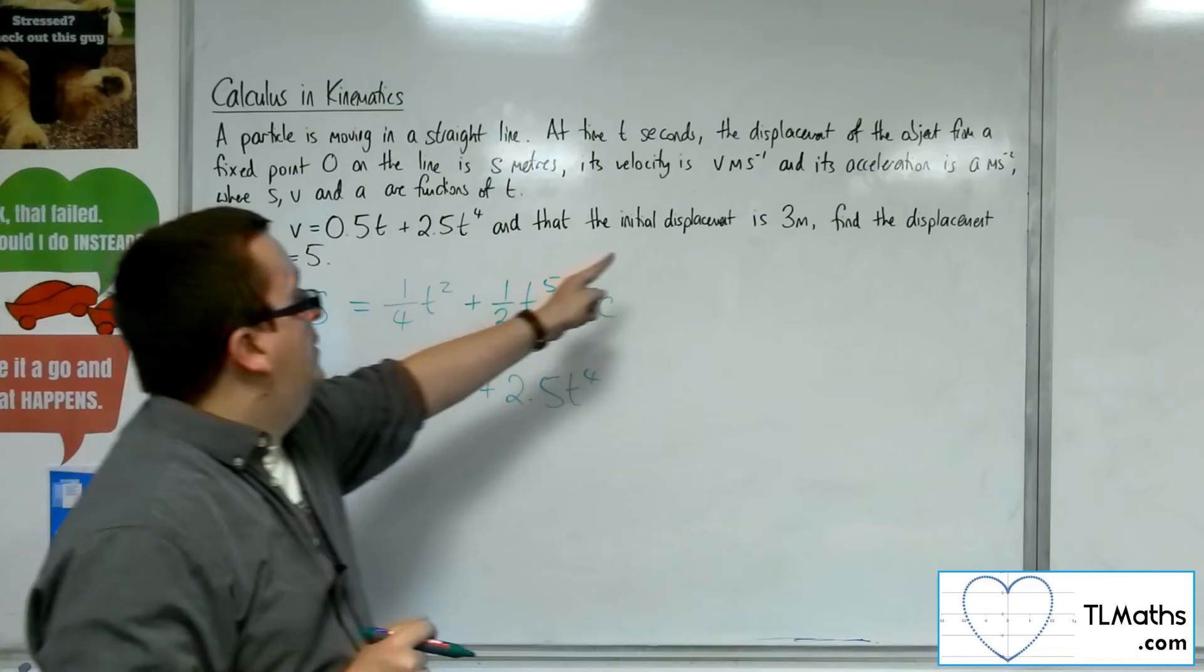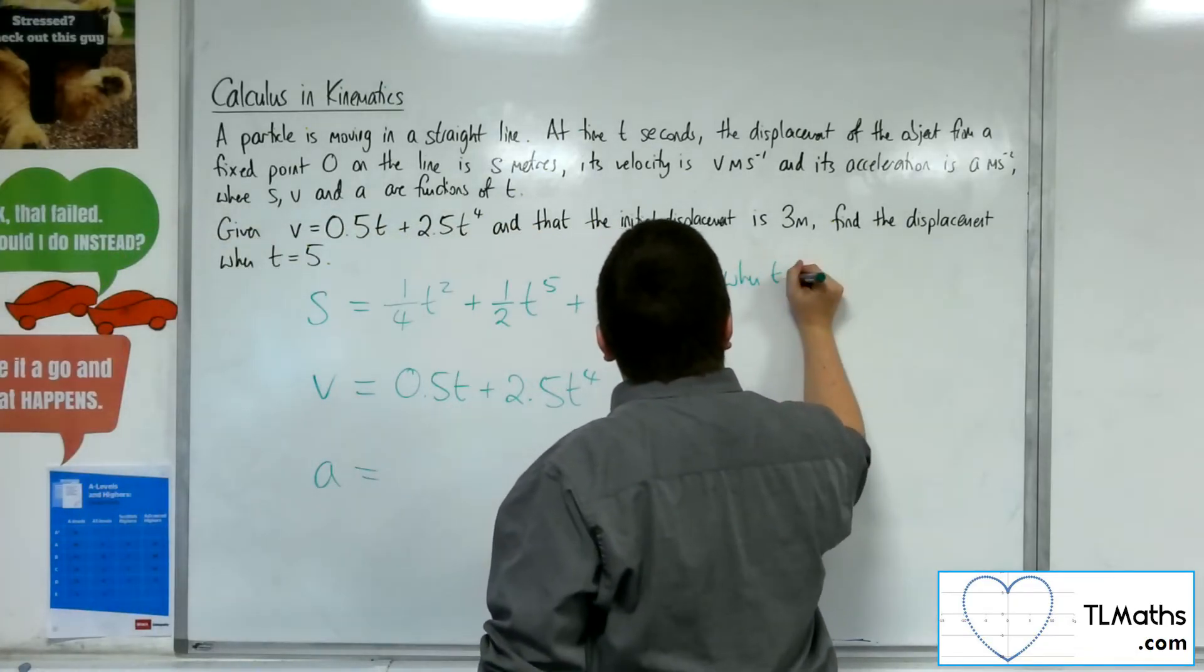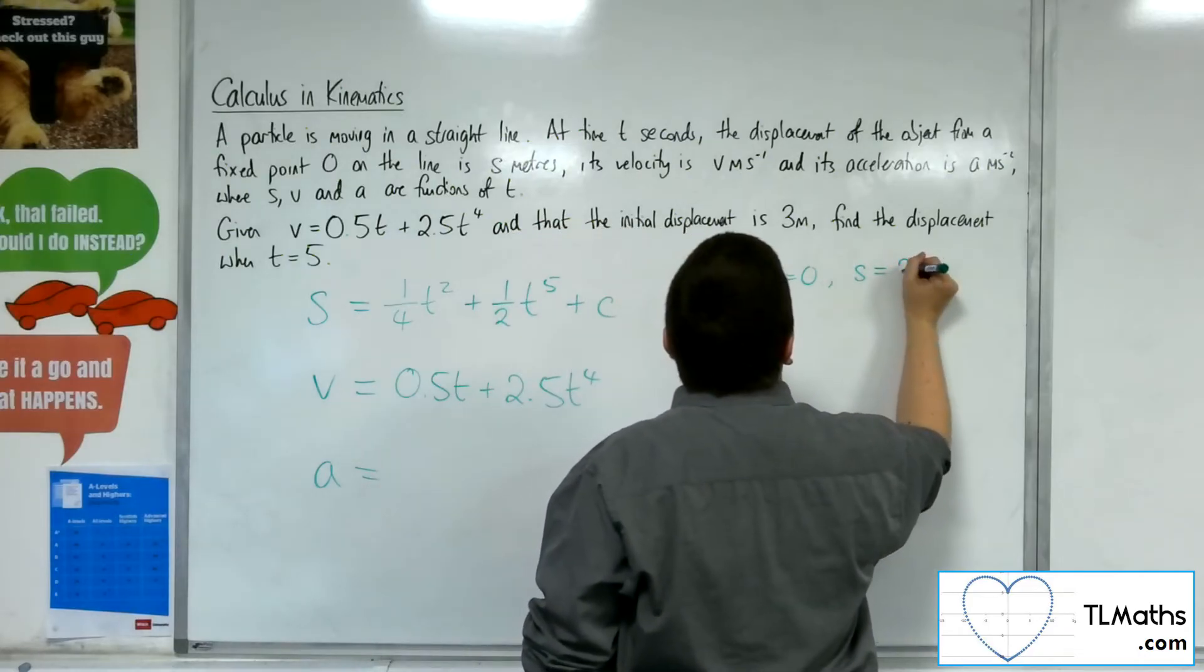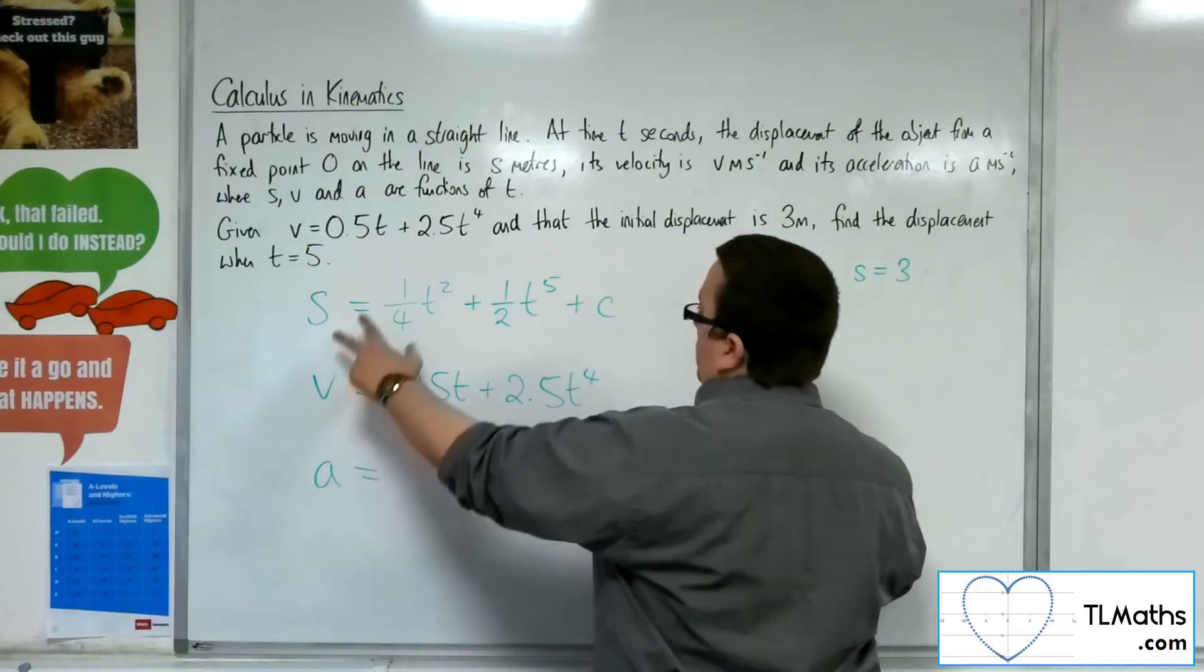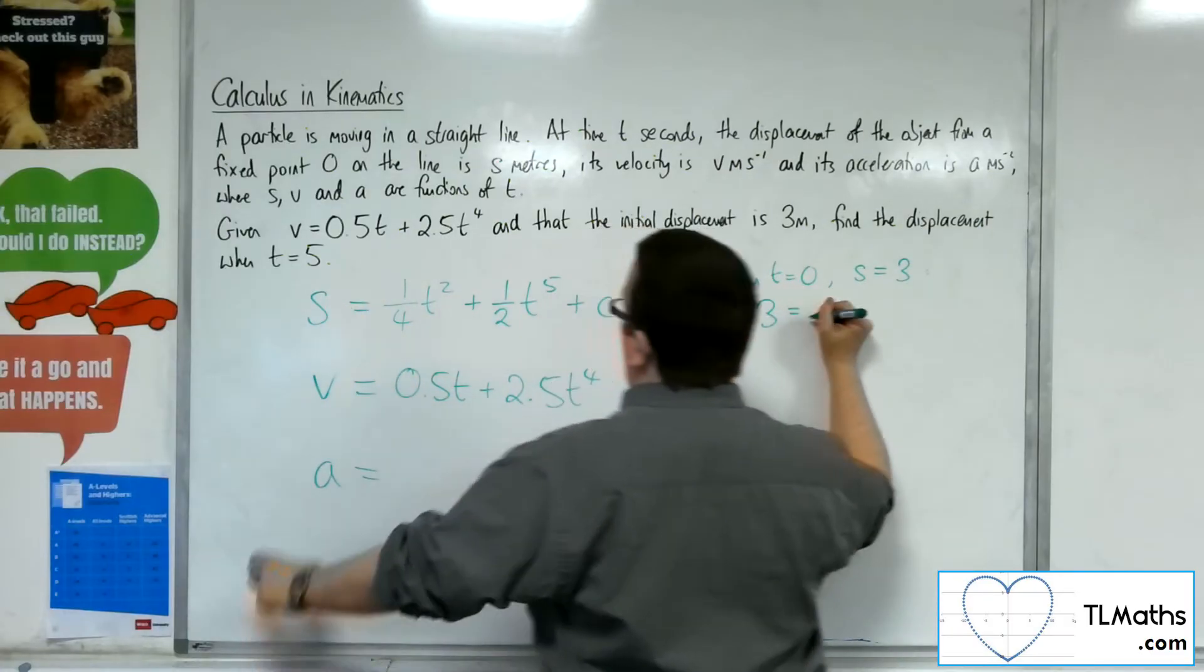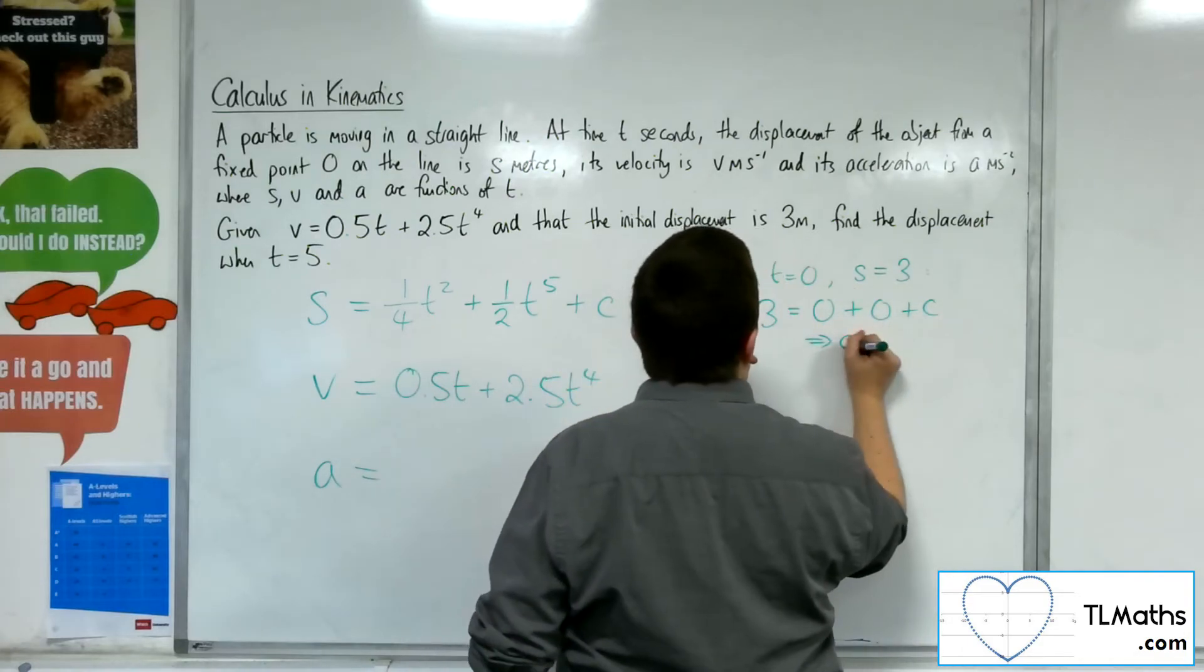Now, we're told that the initial displacement is 3 meters, so when t is 0, that's what it means for initial, the displacement is 3. So I can substitute that into my equation. If s is 3 and t is 0, I get 0 plus 0 plus c, and so c must be 3.